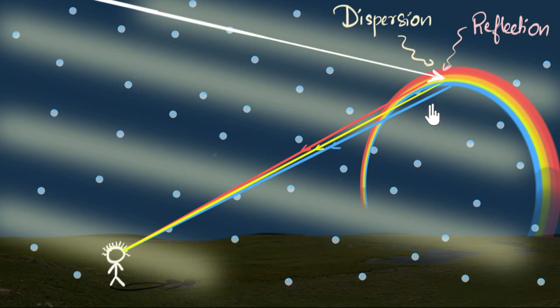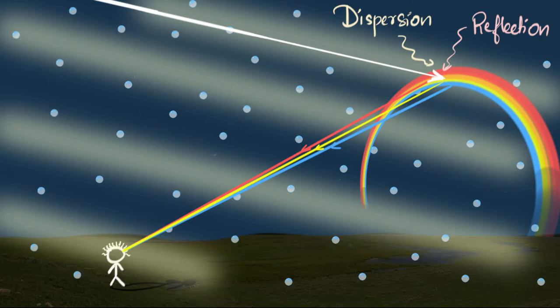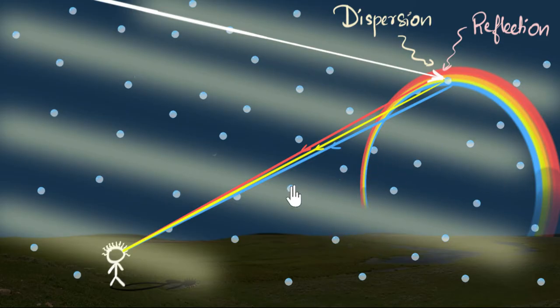Who's causing that dispersion and reflection? There are no prisms in the air. The answer is the raindrop. The raindrops are taking the white light, separating it, and then reflecting it back to give us the rainbow. Isn't this amazing? Just like how scientists do, we work backwards to figure out — or at least make a guess — as to how rainbows are formed.